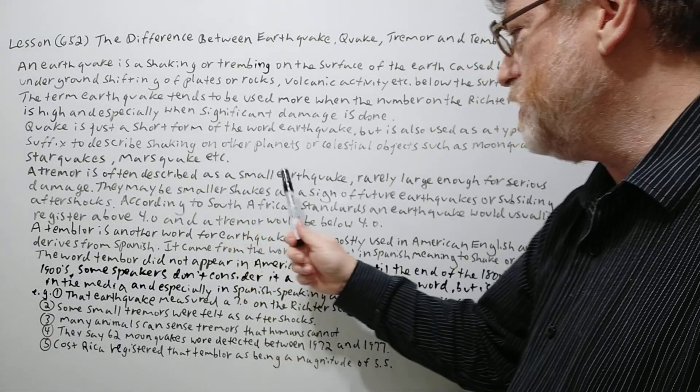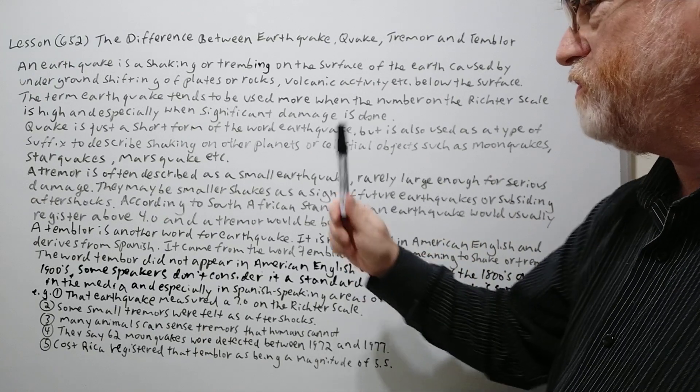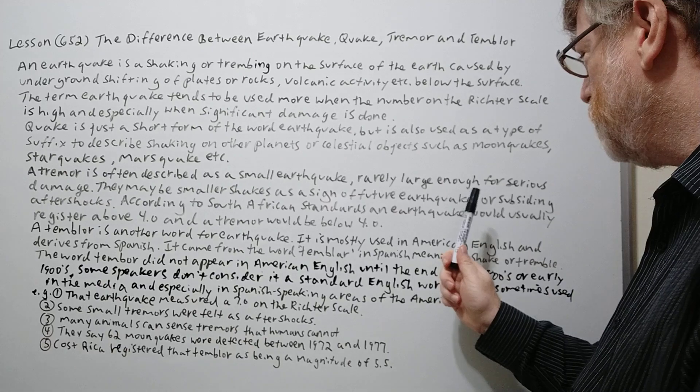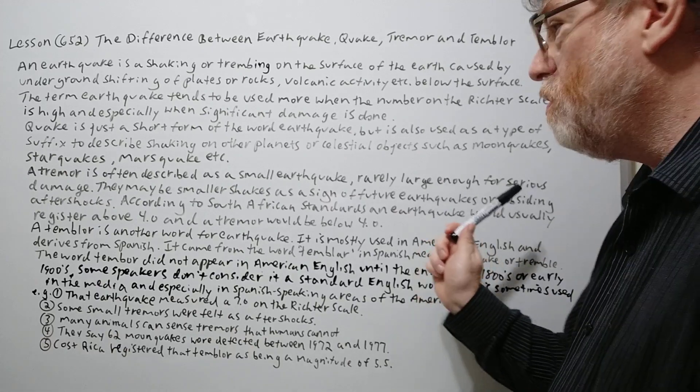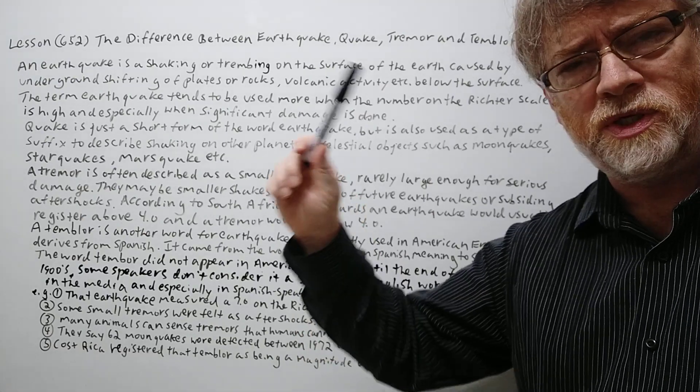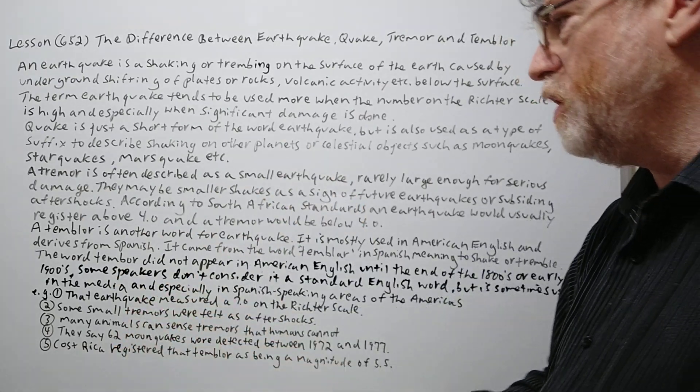A tremor is often described as a small earthquake. Rarely large enough for serious damage. They may be smaller shakes as a sign of future earthquakes or subsiding aftershocks. If the first one wasn't too significant maybe some of the aftershocks might go below this number.